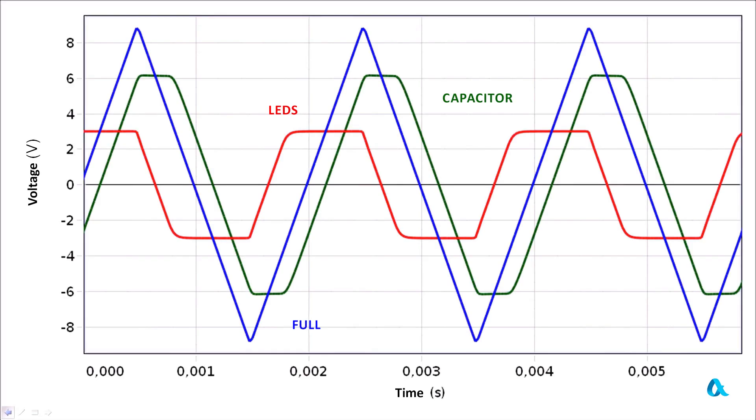And here we see exactly what was predicted. First of all, the sum of the red voltage across the diodes and the green voltage across the capacitor equals the full blue sawtooth, the voltage across the entire section of the circuit.